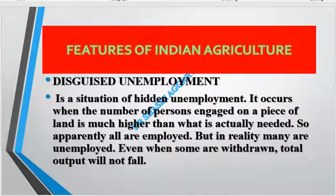Another feature is disguised unemployment. It appears that everyone is working, but actually there is surplus labor. For example, if a family has 7 members but only 2 are needed to work the farm, all 7 work there. If we remove 5 members, the output would not decrease — meaning those 5 are disguisedly unemployed.